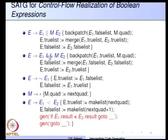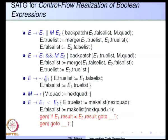For the AND operator, which is complementary to OR: if E1 is false the entire expression is false, so E.falselist is a merge of E1.falselist and E2.falselist. If E1 is true we continue and evaluate E2, so we backpatch E1.truelist to M.quad. E.truelist is simply E2.truelist, because we reach E2 only if E1 is true. For E → NOT E1, we simply swap the lists: truelist becomes E1.falselist and falselist becomes E1.truelist.